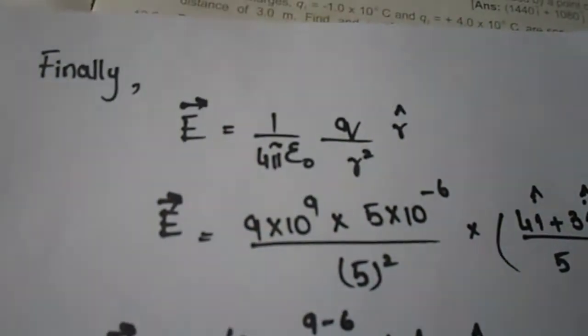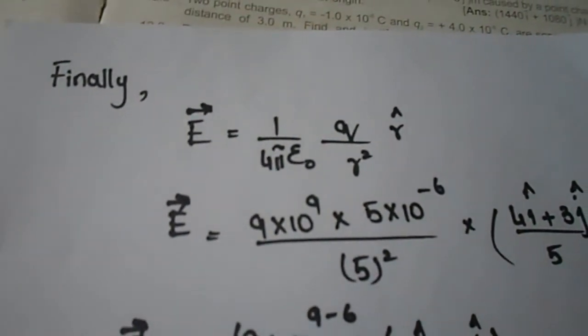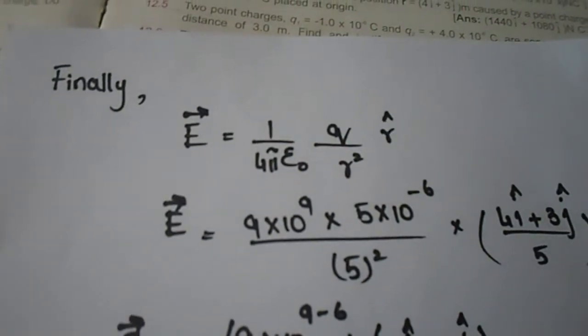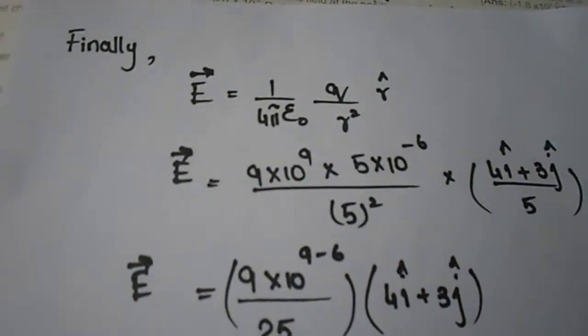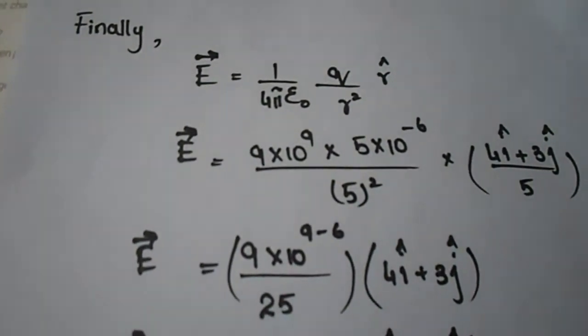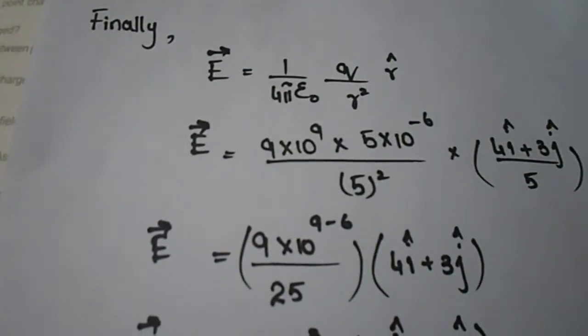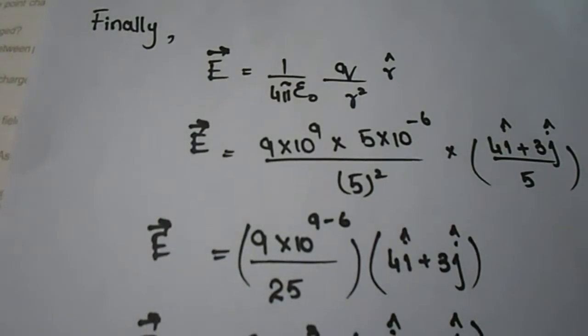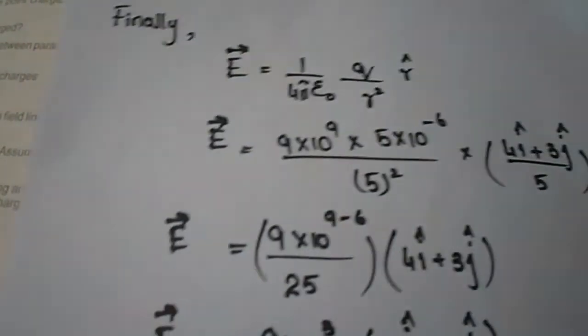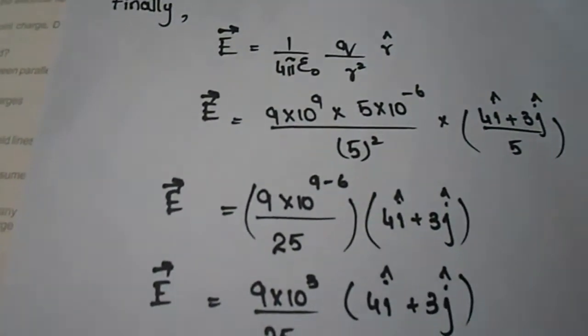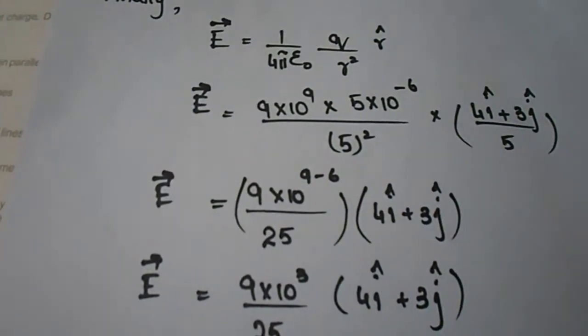Finally we insert values in the formula E equals 1 over 4 pi epsilon not times q divided by r squared times unit vector r. The constant 1 over 4 pi epsilon not equals 9 into 10 to the power 9, q value is 5 into 10 to the power minus 6, r value is 5 squared, and unit vector r is (4i plus 3j) divided by 5.